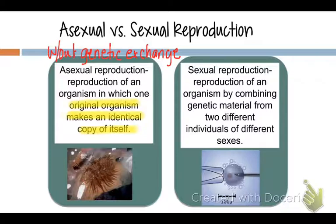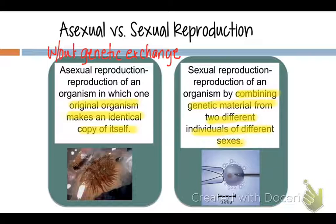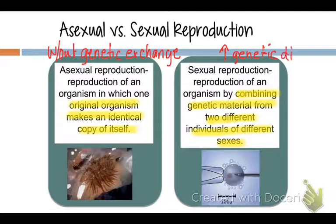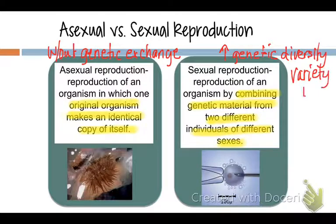Sexual reproduction is when genetic material from two different individuals of different sexes are combined — combining genetic material. The result of sexual reproduction is it increases genetic diversity, meaning that all organisms don't look exactly the same as each other, which is good. Variation is good. Variety is good.